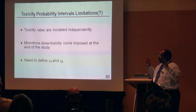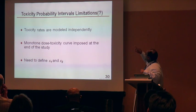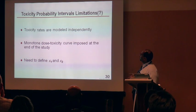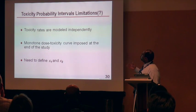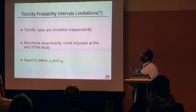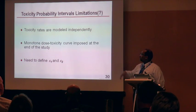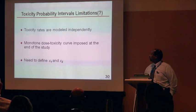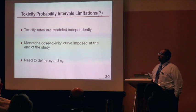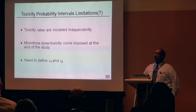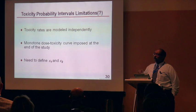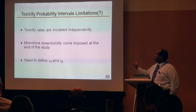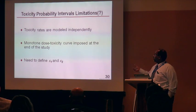Limitations of the method: toxicity rates are modeled independently; a monotone dose-toxicity curve is imposed using isotonic regression at the end of the trial; and you need to define epsilon_1 and epsilon_2 — usually set to something like 0.05 or 0.1. To implement the method, you need software, a defined maximum sample size, a probability-of-stopping threshold, a target toxicity, and defined epsilon_1 and epsilon_2 values.